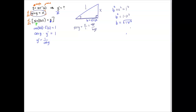Now I'll go back to the derivative. The answer is 1/cos(y), which is the same as secant(y). The ratio for cosine is adjacent over hypotenuse, so secant is hypotenuse over adjacent, which for our triangle is 1/√(1 − x²). That is the derivative of inverse sine.